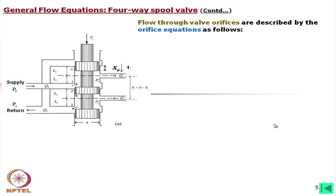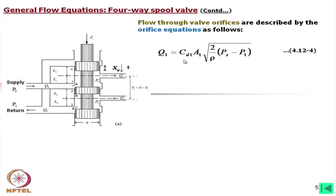Flow through valve orifices is described by the orifice equation. Q1 = Cd1 · A1 · √(2/ρ · (Ps − P1)), where Q1 is the flow through orifice 1, Cd1 is the discharge coefficient, A1 is the orifice area, Ps is system pressure, and P1 is the downstream pressure. The orifice area A1 depends not only on the opening but also on the port width, giving the effective orifice area.